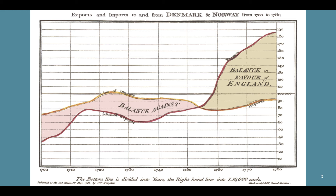In this classic chart, it shows the exports and imports to and from Denmark and Norway from 1700 to 1760, with respect to England. The yellow line on top shows the line of imports, which is higher than the red line of exports, and you can see how it changes over time. On the left-hand side there is a balance against England, and then around 1750 to 1760 it changes in favor of England.